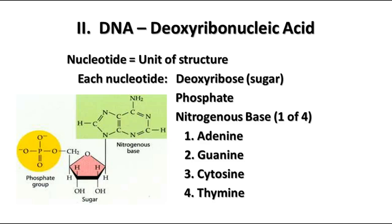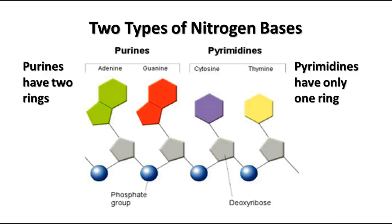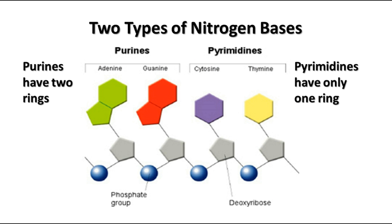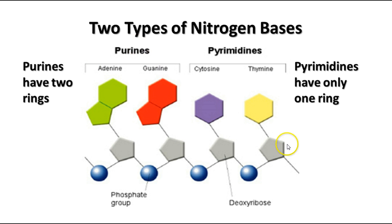The nitrogen bases fall into two categories: purines and pyrimidines, based on their molecular structure. Purines have two rings — a hexagon and a pentagon attached together — while pyrimidines have only one ring. The purines are adenine and guanine; the pyrimidines are cytosine and thymine. A helpful memory aid: 'AG are pure' — adenine and guanine are the purines. You can also think of Purina cat chow, which has agricultural (Ag) uses, to remember that AG are the purines.